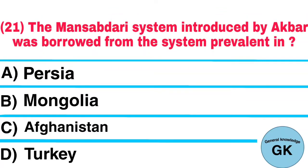Question number 21. The Mansabdari system introduced by Akbar was borrowed from the system prevalent in: A. Persia, B. Mongolia, C. Afghanistan, D. Turkey. Answer: Mongolia.